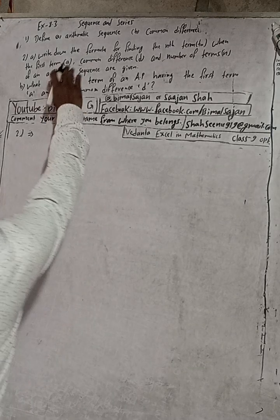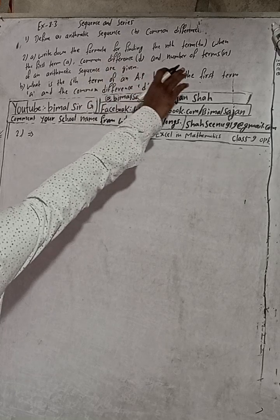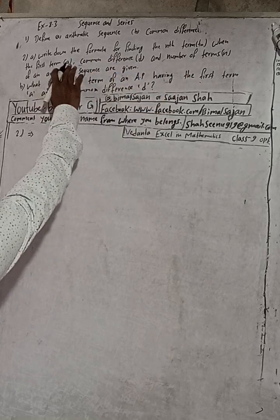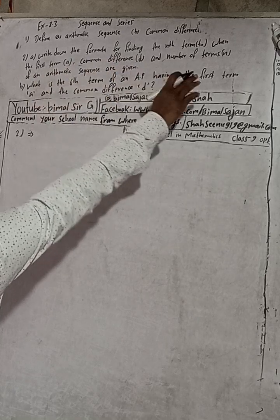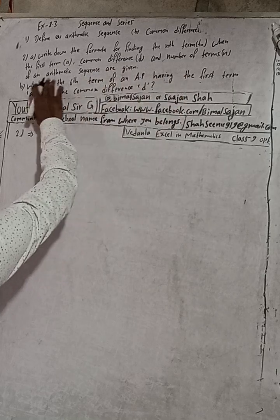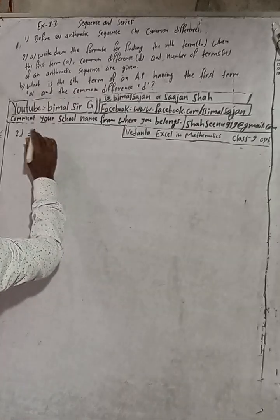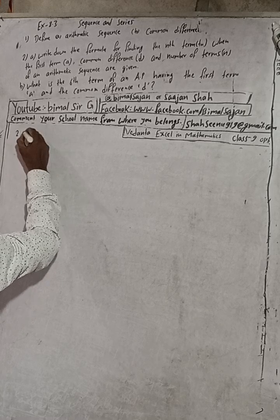The question is: write down the formula for finding the nth term when the first term a, common difference d, and the number of terms n of an arithmetic sequence are given. So here, solution of part A.